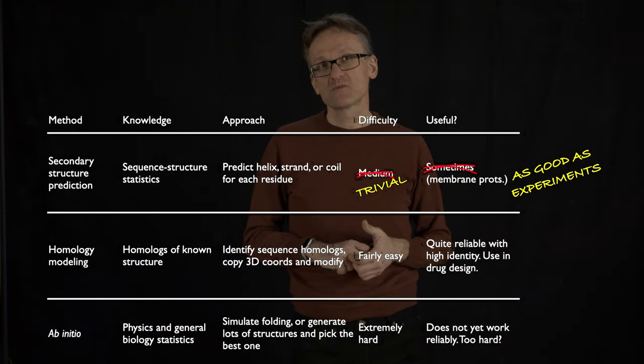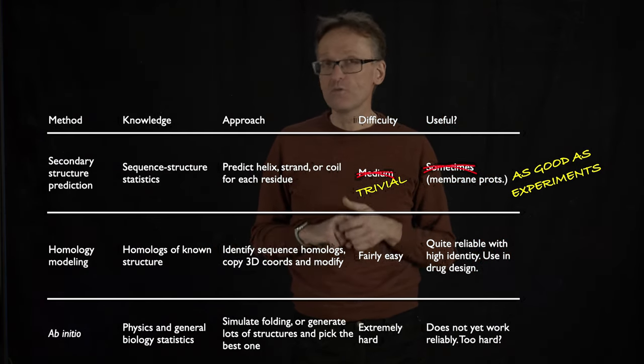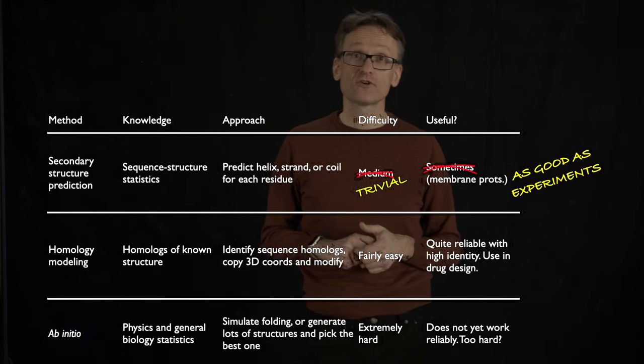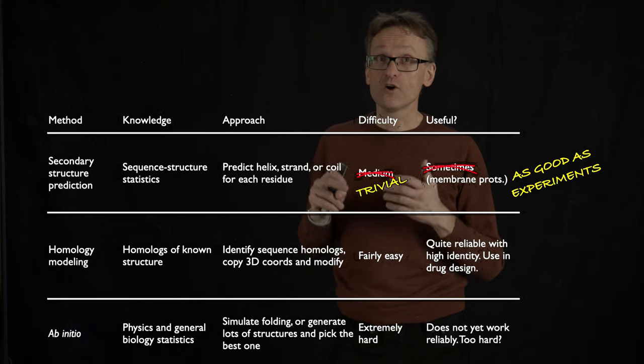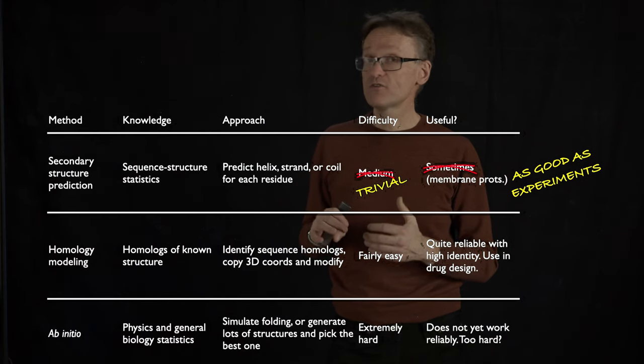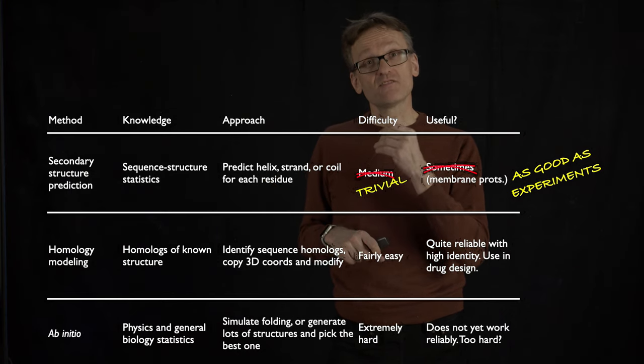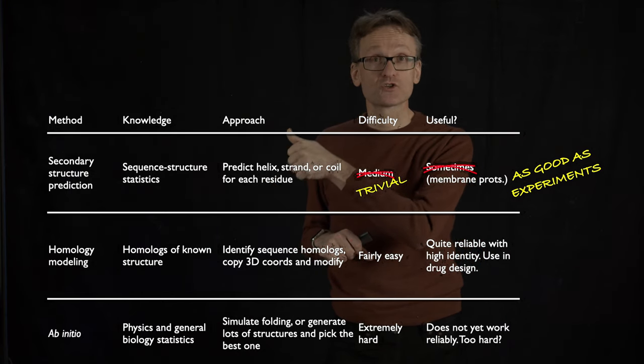So, homology modeling is an interesting problem. Homology modeling means that for these sequences where we have roughly 30% identity, we know that there is another related protein that they do have a common ancestor, and for at least one of those related proteins there is a structure known.